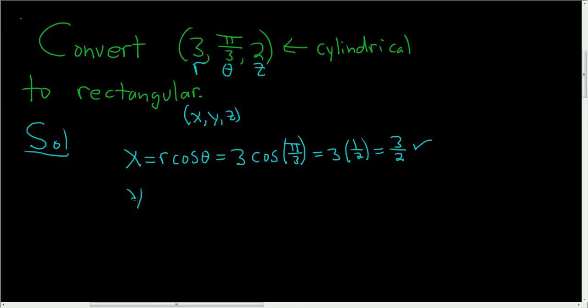The formula for y is r sine theta. And in this case, again, r is 3, and theta is pi over 3, so we get the sine of pi over 3. And so this is 3. And the sine of pi over 3 is the square root of 3 over 2. So this is simply 3 square root of 3 over 2. Two down.